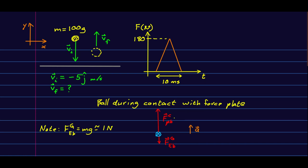So I have drawn the free body diagram for the ball during its contact with the force plate. All there is is a force up due to the force plate and the downward gravitational force, and the ball must be accelerating upward during the bounce off the force plate. And I'll just note that the gravitational force on it is about one newton.